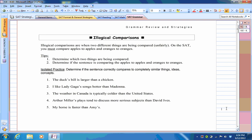The duck's bill is larger than a chicken. So what we're comparing is a body part of a duck to a whole chicken. That really wouldn't make sense. You probably want to say that a duck's bill is larger than a chicken's bill. So that way we're comparing two things that are logical.